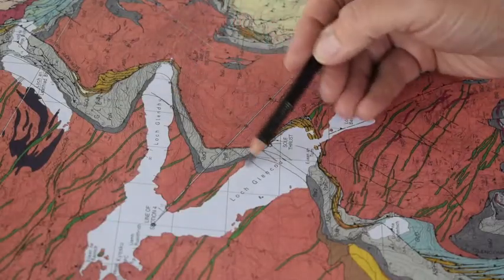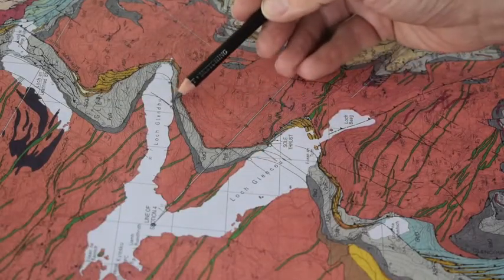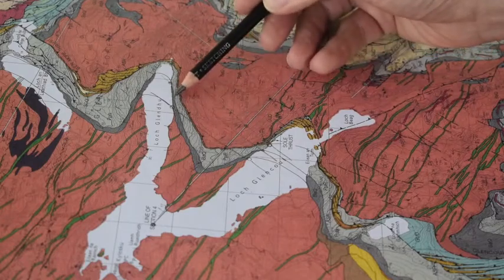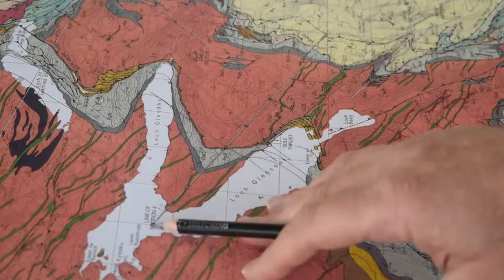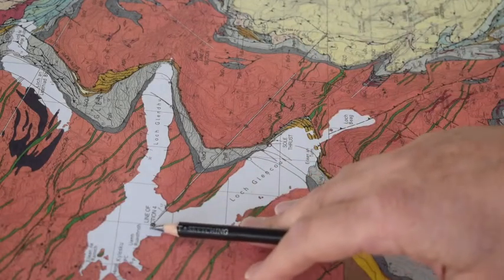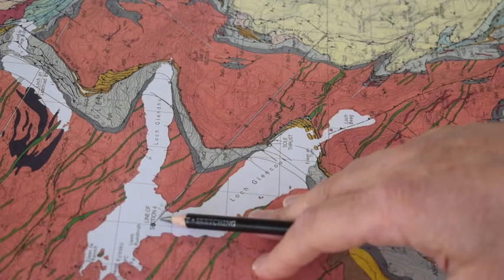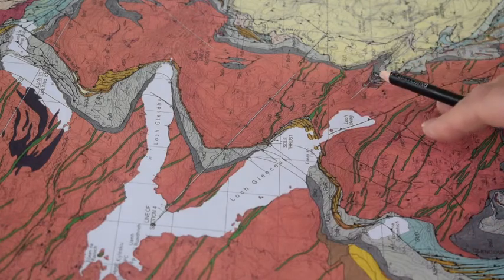I've drawn some other lines onto this map which we'll use later - structure contours on three boundaries on the map. First though, let's transfer the information from the section line onto a profile.